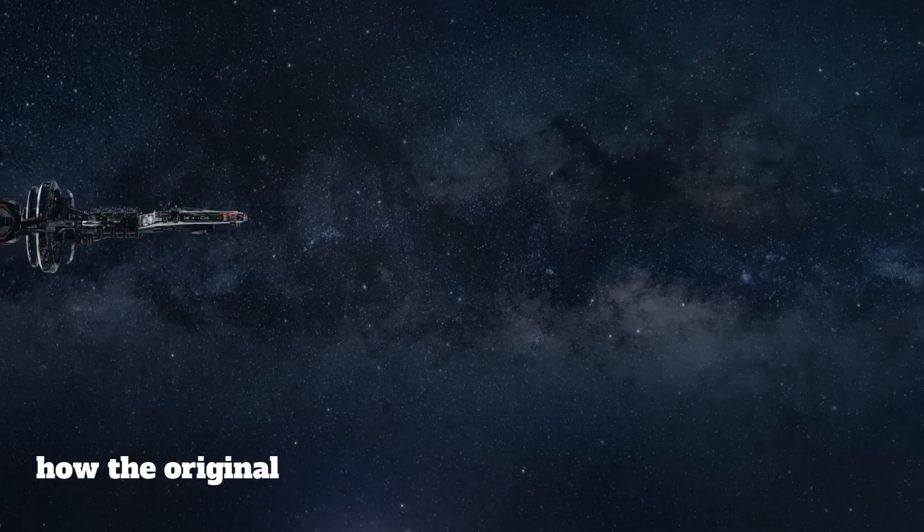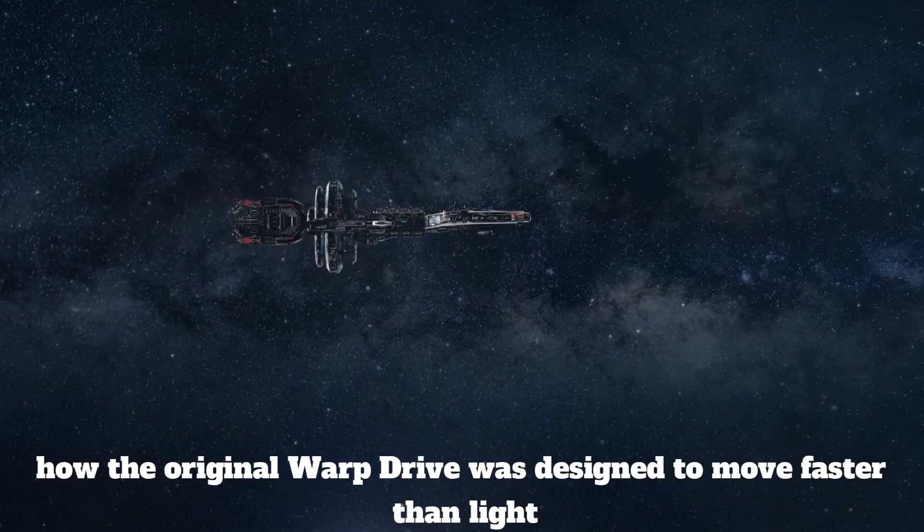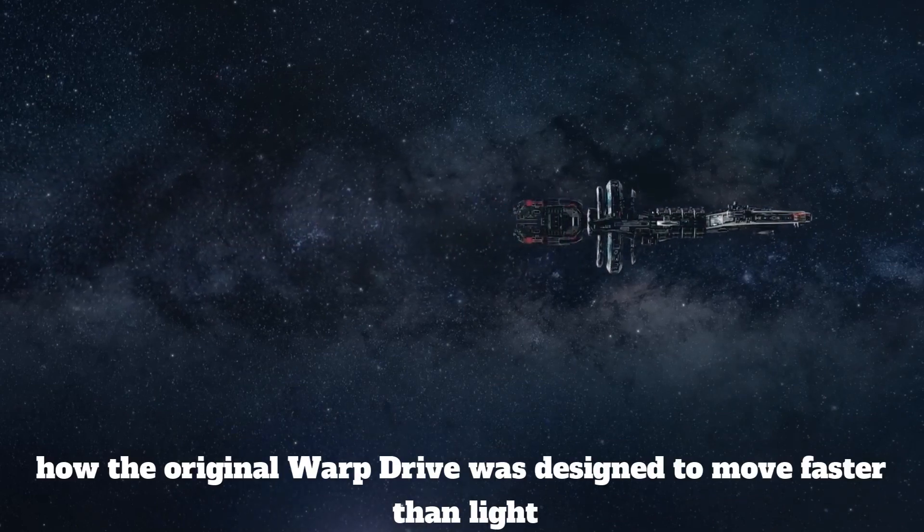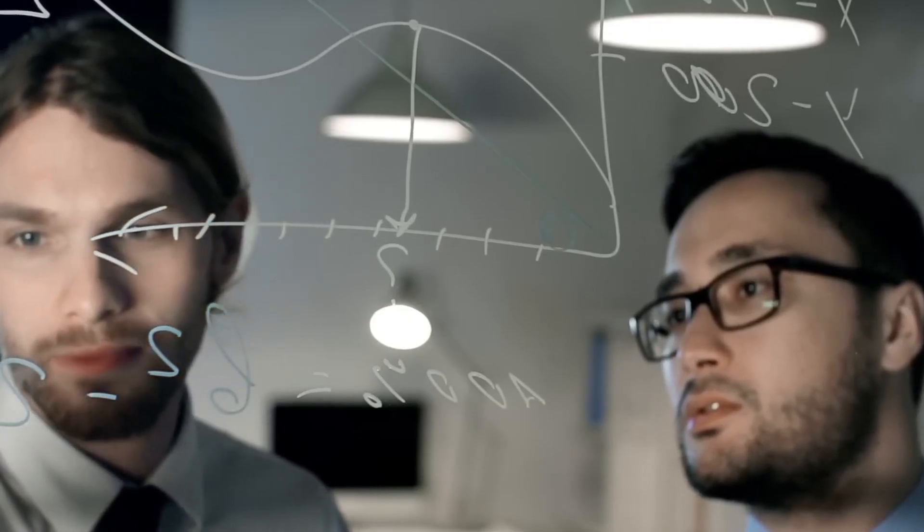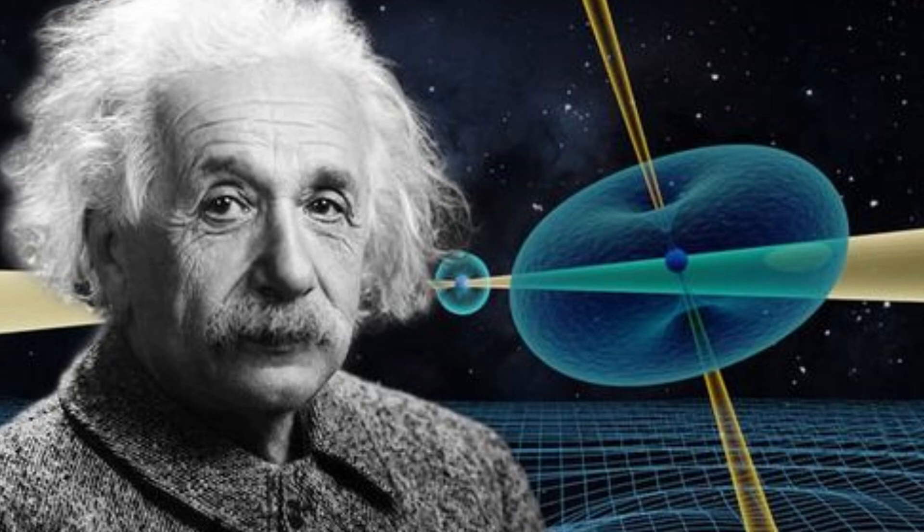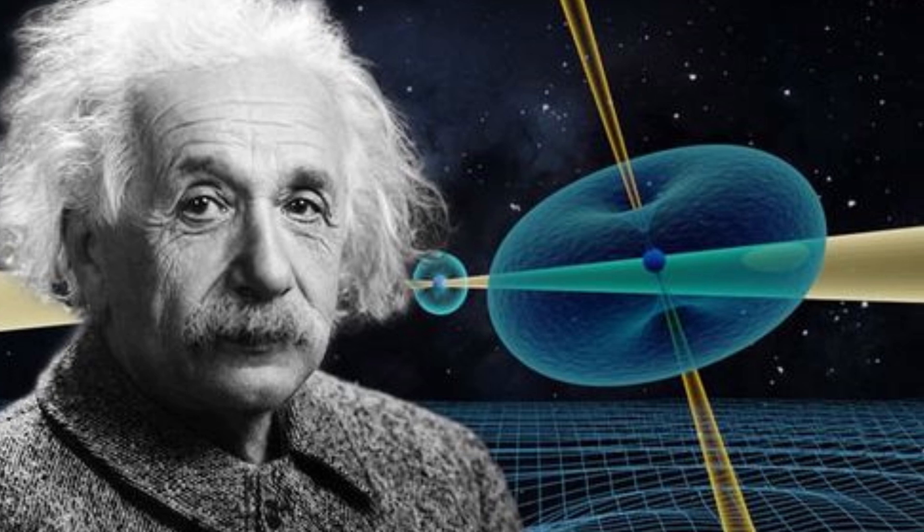First, let's take a look at how the original warp drive was designed to move faster than light, and then we'll examine what the new approach by Swiss scientists brings to the table. As you know, according to Einstein's theory of relativity, no object can move faster than the speed of light. The initial concept of the warp drive didn't intend to defy this law.